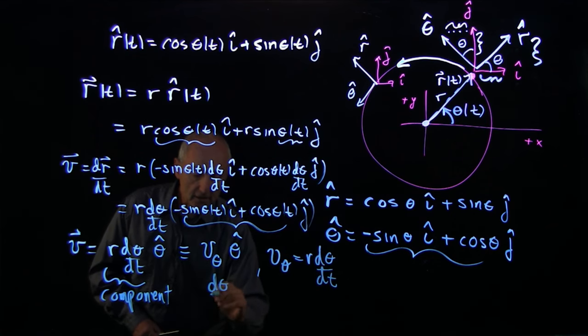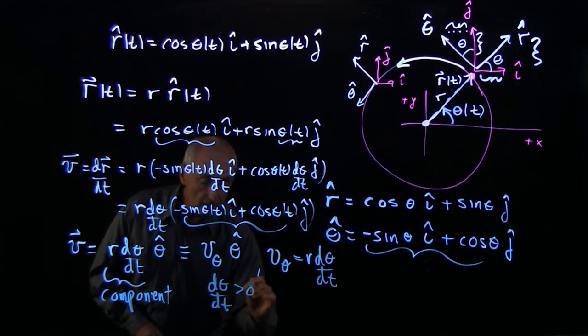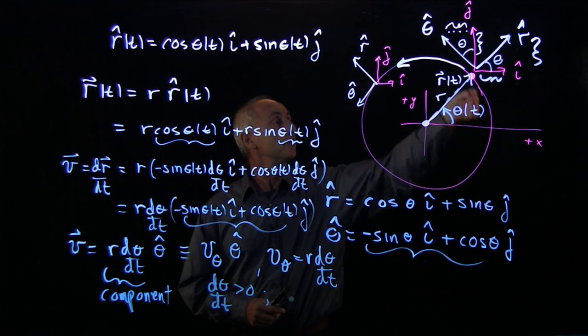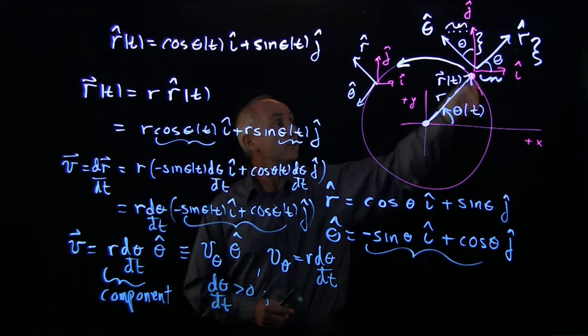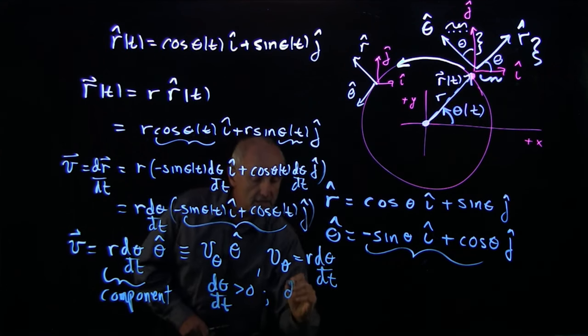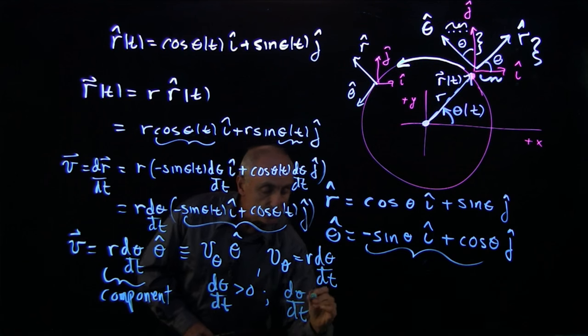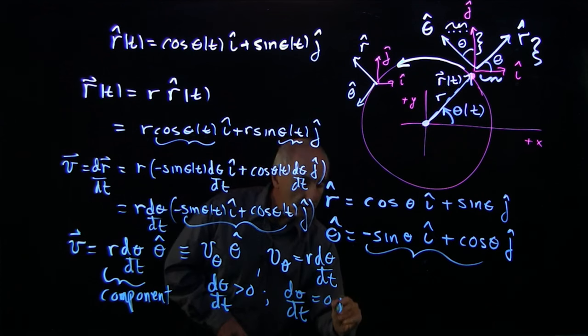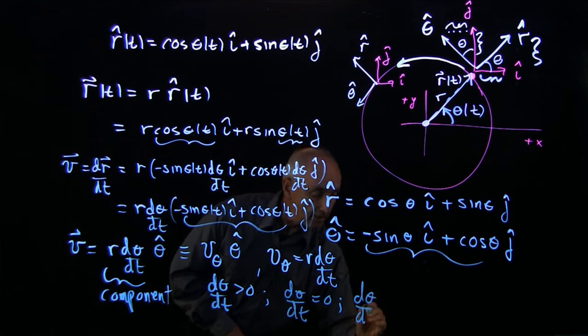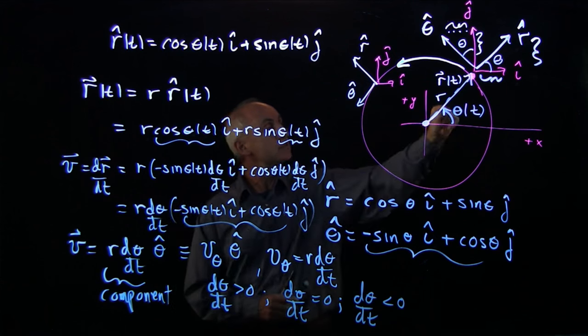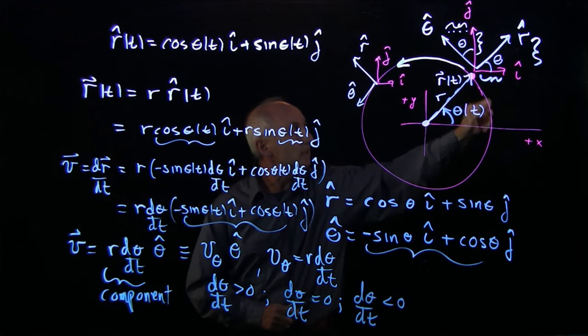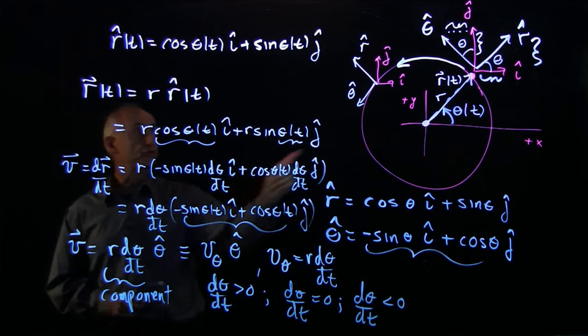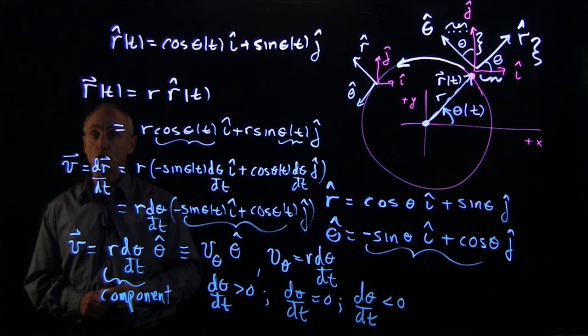For example, if d theta dt is positive, that means that our angle theta is increasing, so the object is moving the way I indicate with my finger. If d theta dt is zero, then the angle is not changing, so the object is at rest. And finally, if d theta dt is negative, then the angle theta is decreasing, and so the object is moving in this direction. So this is our velocity for a circular motion expressed in polar coordinates.